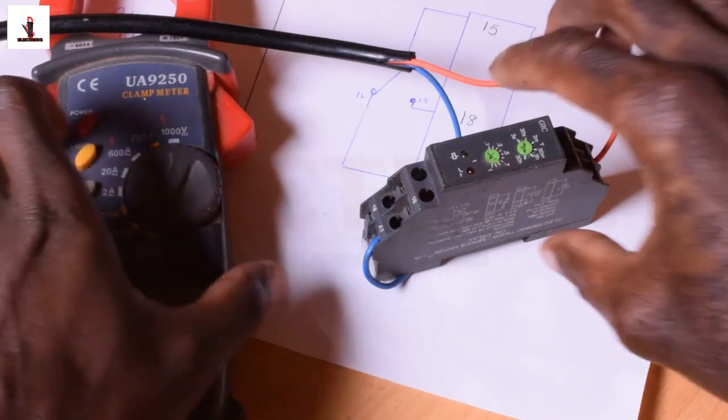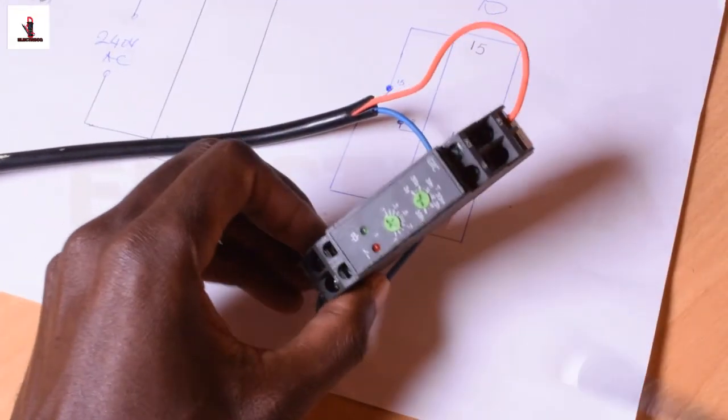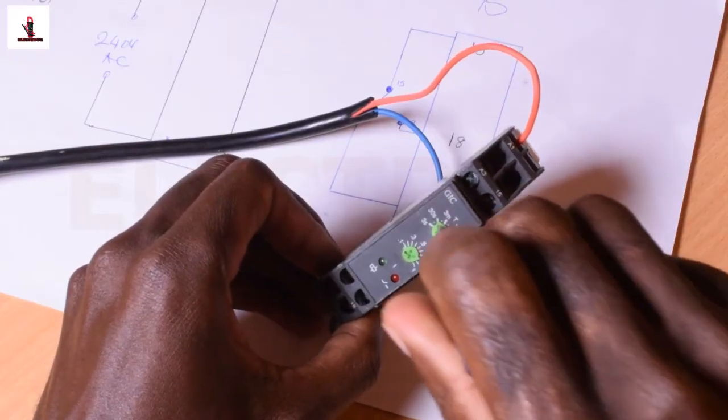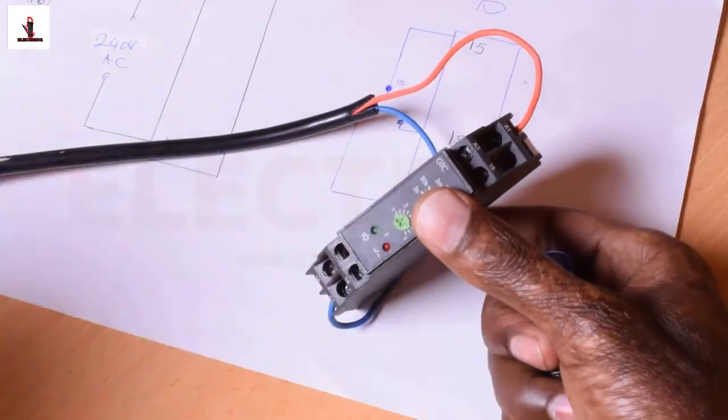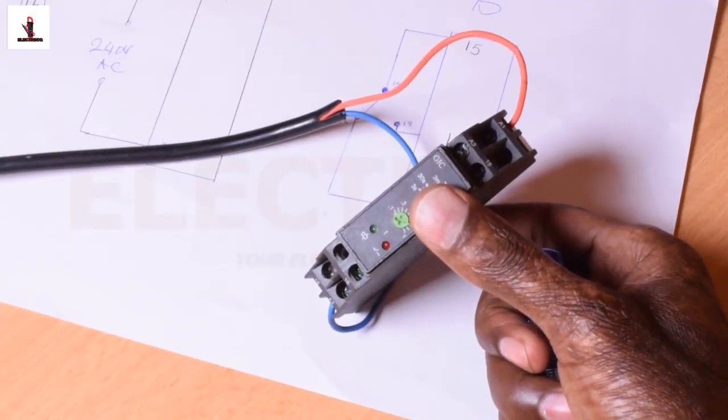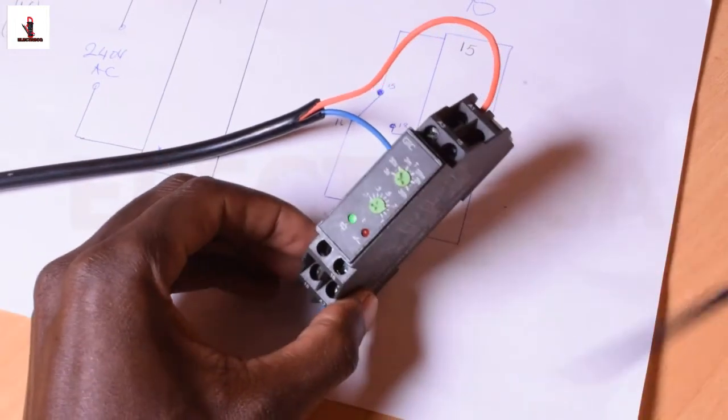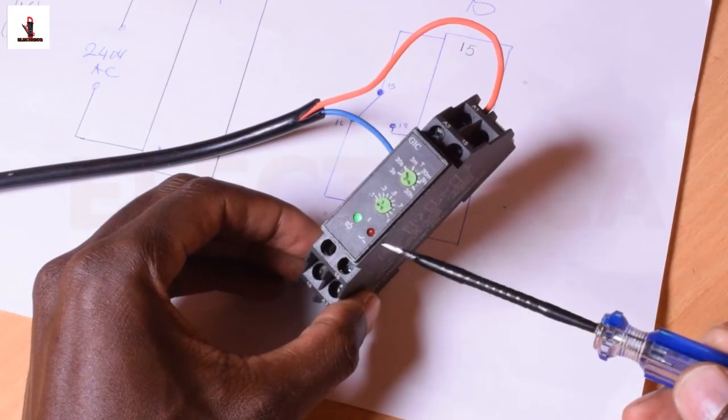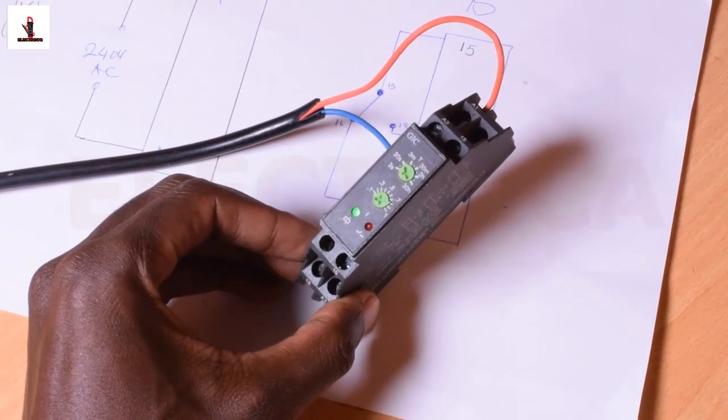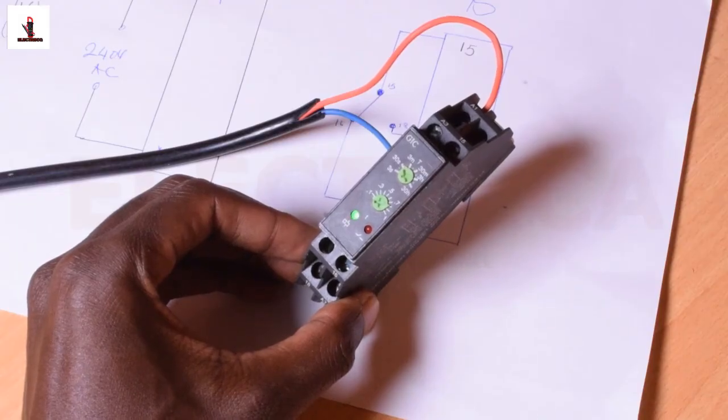So basically that's what happens: normally closed opens and normally open closes. Now it's in 30 seconds, so you are able to see. So it will wait for 30 seconds before this one engages—that's the delay that you've given it. There you go, now it's on.